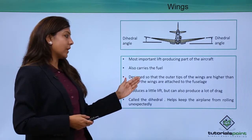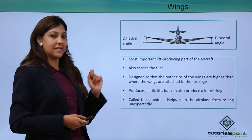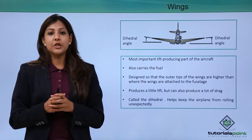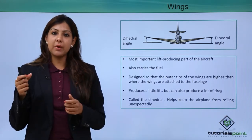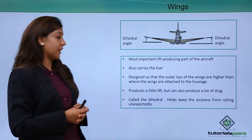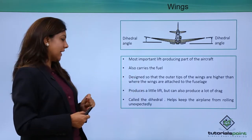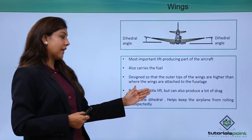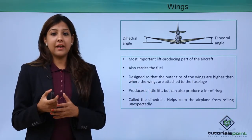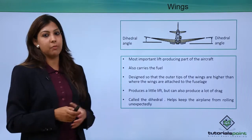The wings are designed so that the outer tip is higher than where the wings are attached to the fuselage. If you have noticed the wings of an aircraft, you will see that the very tip is bent slightly upward at the front. This produces a little lift but can also produce a lot of drag. It is called the dihedral because it helps prevent the aircraft from rolling unexpectedly to one side.